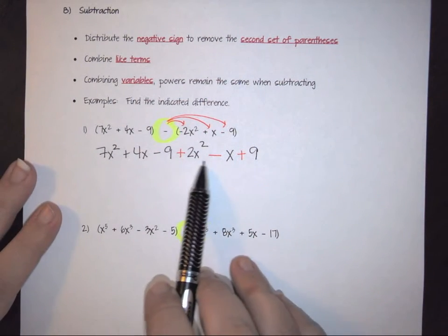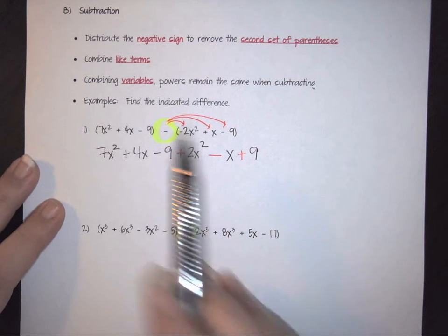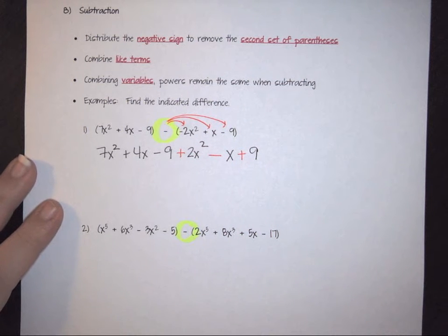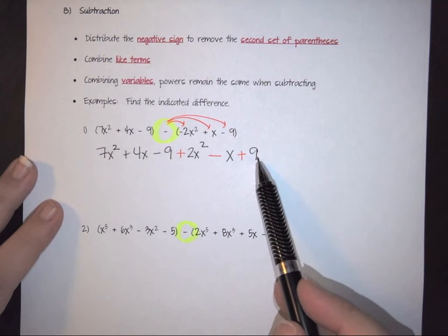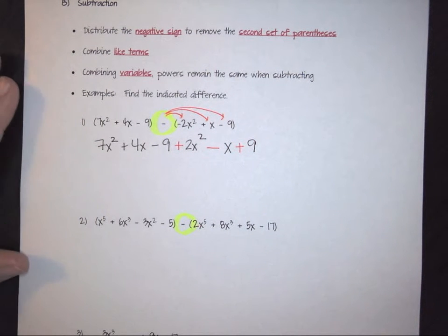So notice, in this back parenthesis here, we have changed all of our signs because of this negative out in front. Once you get to this step, then everything else becomes the same. Now all we have to do is we just simply have to combine our terms.